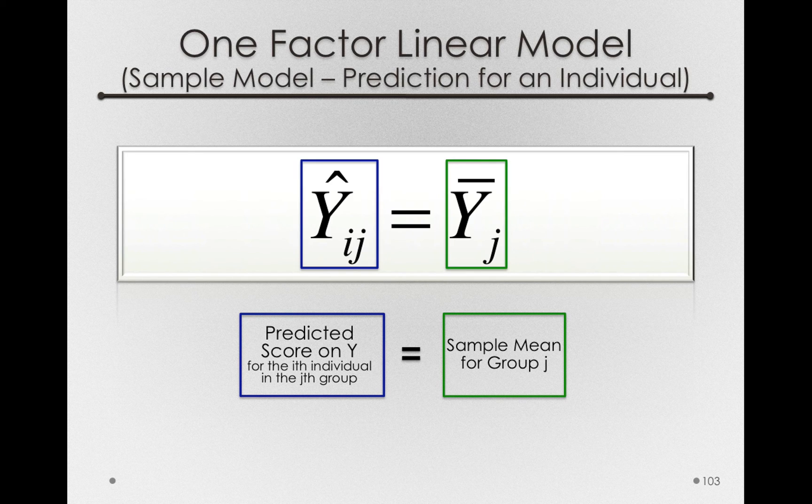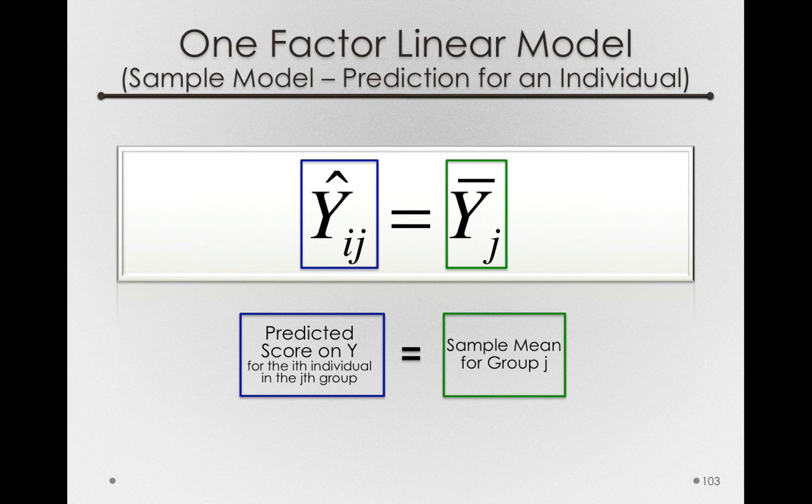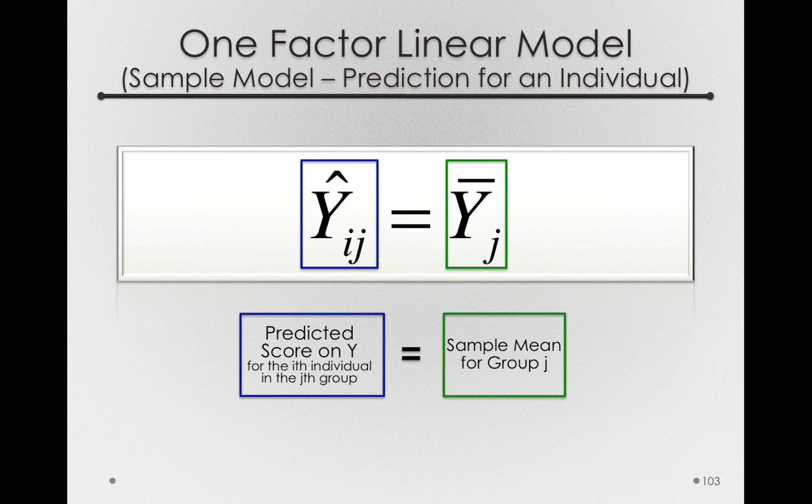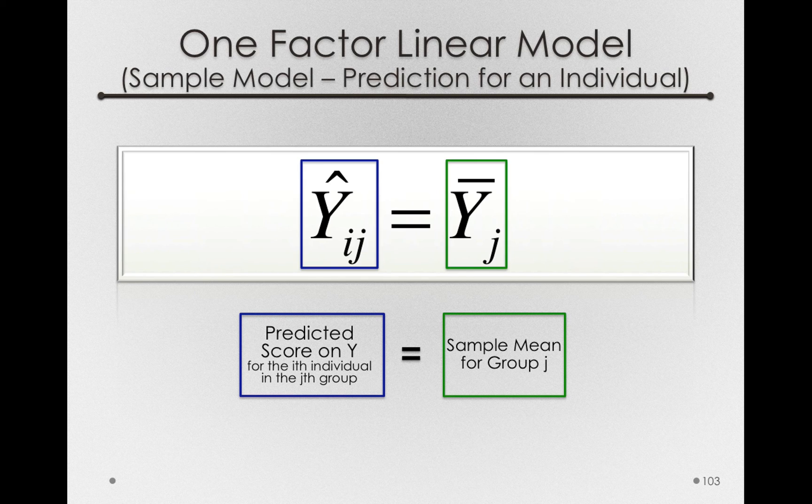And notice that this is a very simple definition. The predicted score for a person is just whatever the mean is of the group they're in. And if you think about this a little bit, that's the best we can really do. If we know something about the treatment offsets, how much above or below average a group will be paying, then if we had to predict for any person in a group, we would simply predict the group mean.